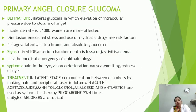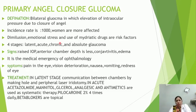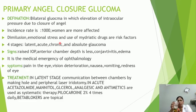Primary angle closure glaucoma is bilateral glaucoma in which elevation of intraocular pressure is due to closure of the angle. Incidence is 1 in 1000 people. Females are more affected — female to male ratio is 4:1. Risk factors include emotional stress and use of mydriatic drugs. There are four stages: latent, acute, chronic, and absolute glaucoma.